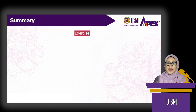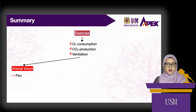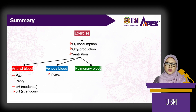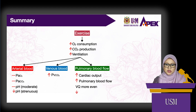In summary, exercise leads to increased oxygen consumption, increased carbon dioxide production, and increased ventilation. In the arterial blood, the pressure of oxygen and carbon dioxide do not change, and pH does not change in moderate exercise but decreases in strenuous exercise. Venous pressure of carbon dioxide increases due to increased tissue metabolism. Cardiac output increases, which also increases pulmonary blood flow, resulting in a more even VQ ratio throughout the lungs and reduced physiologic dead space.